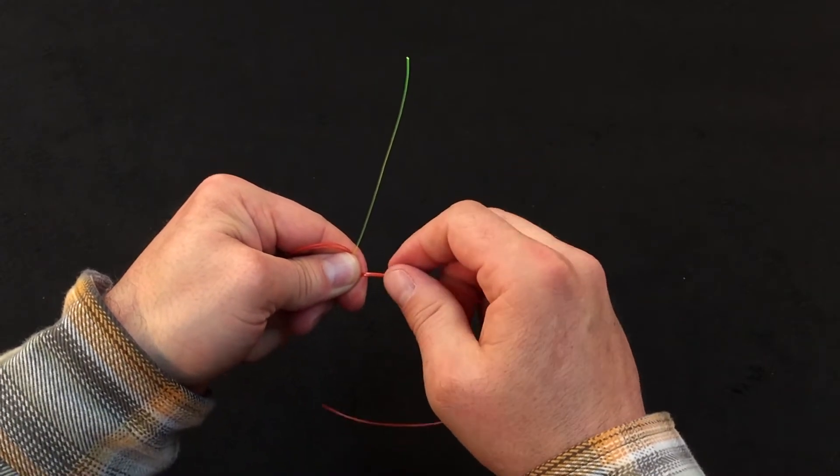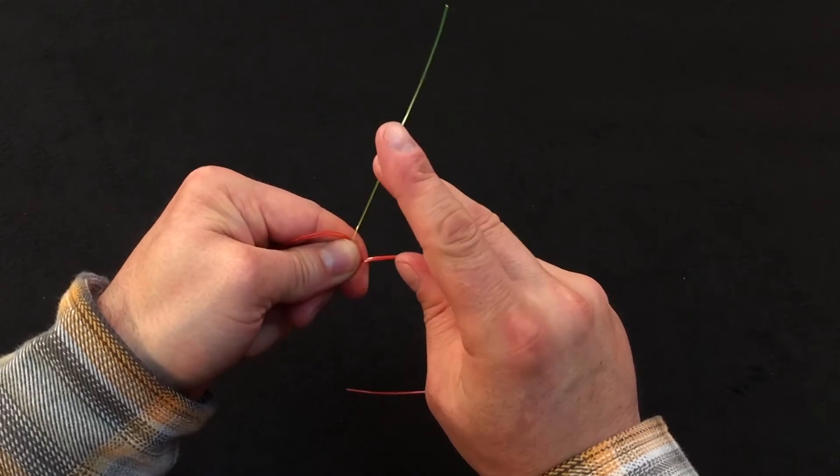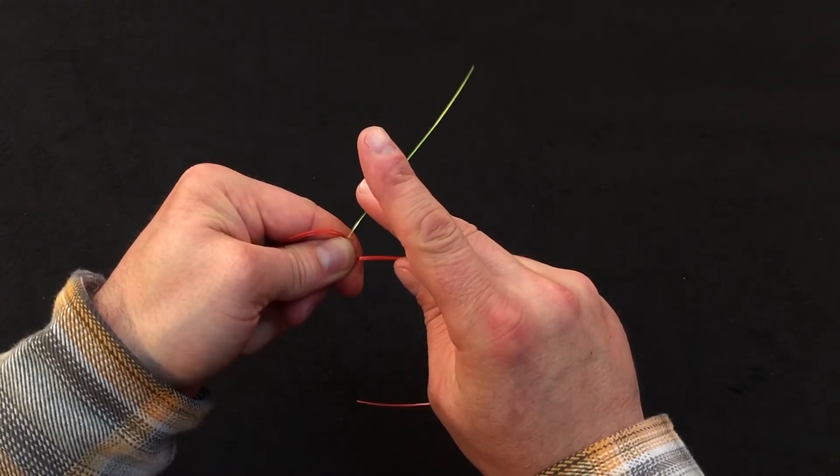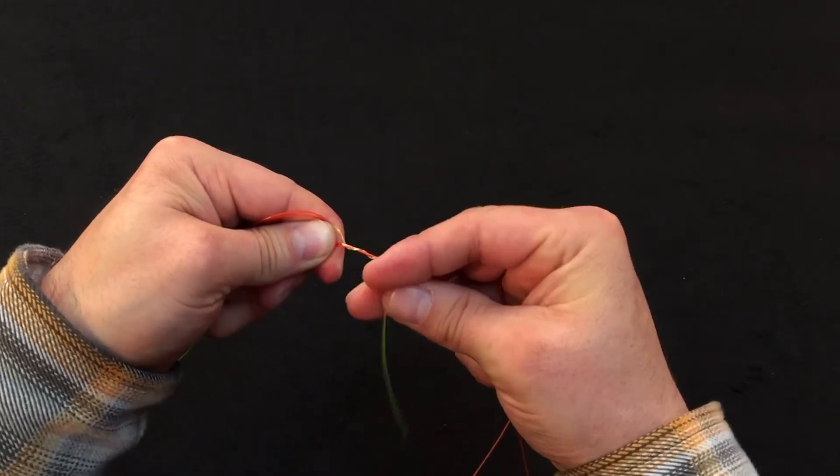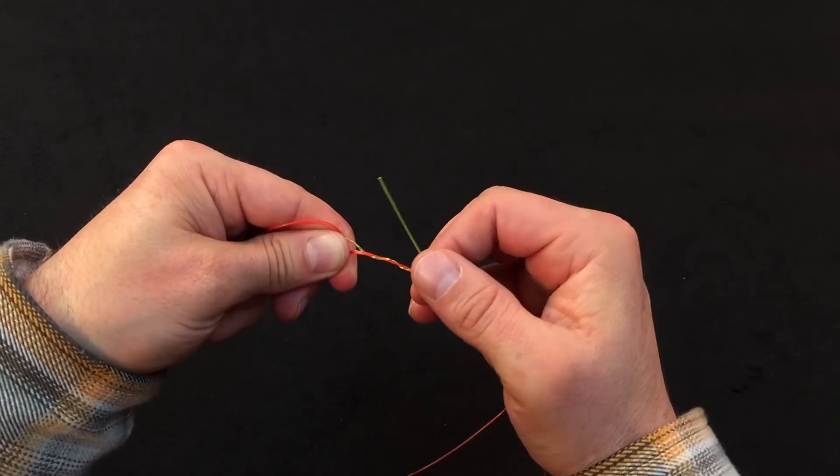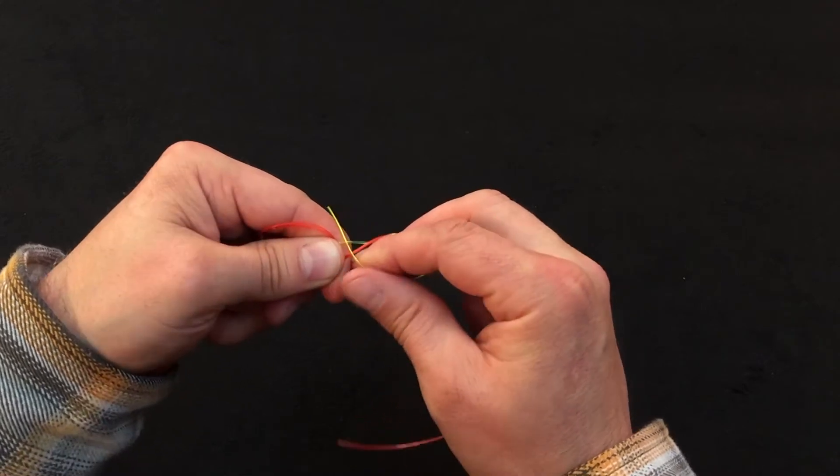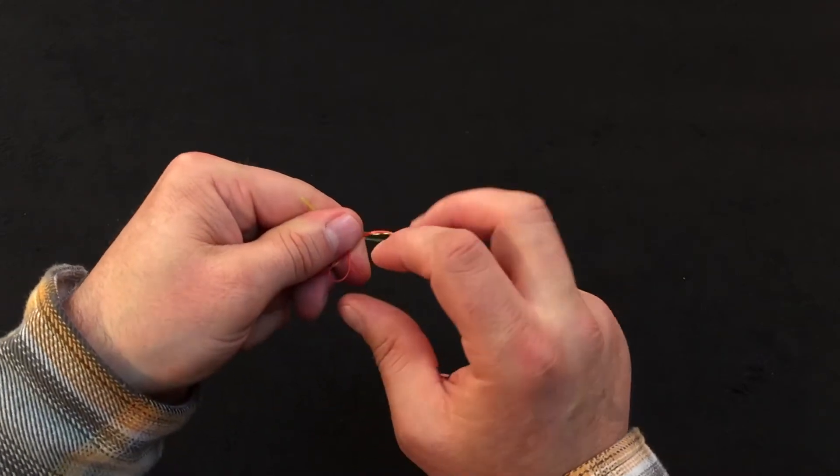Next, we're going to take our large diameter end and wrap it going away from us three times as well. One, two, three turns. And we're going to take that tag in and tuck it back through the same V as our other tag end.